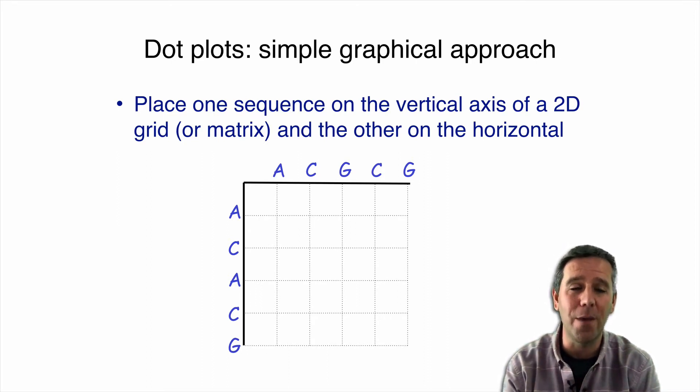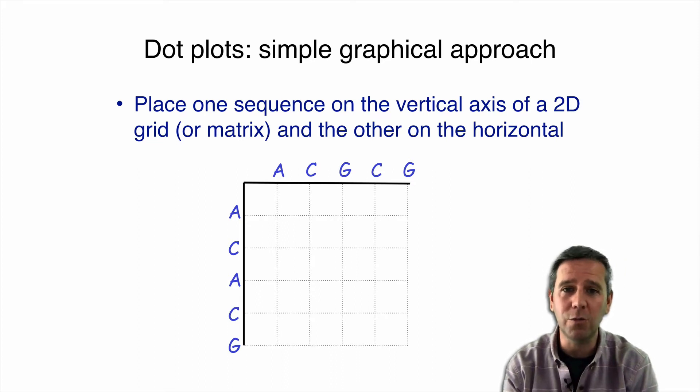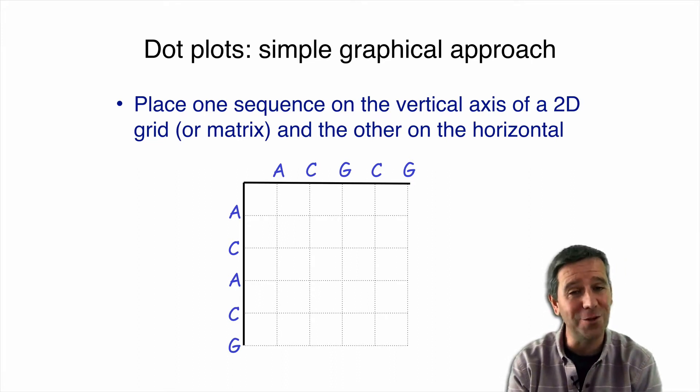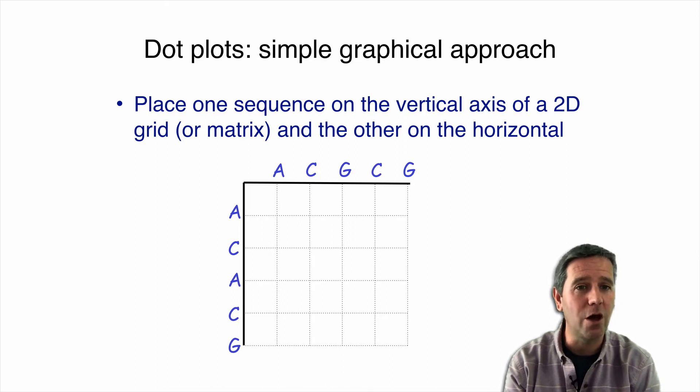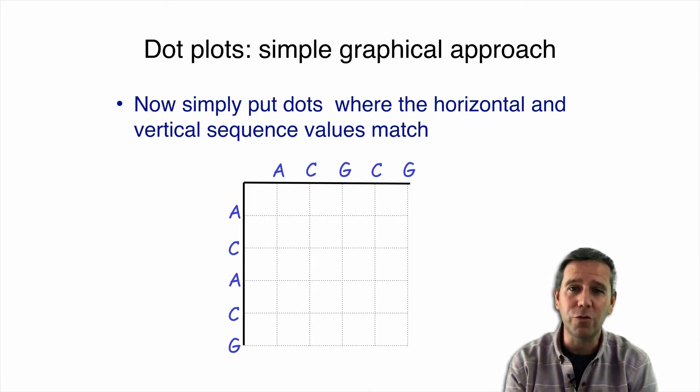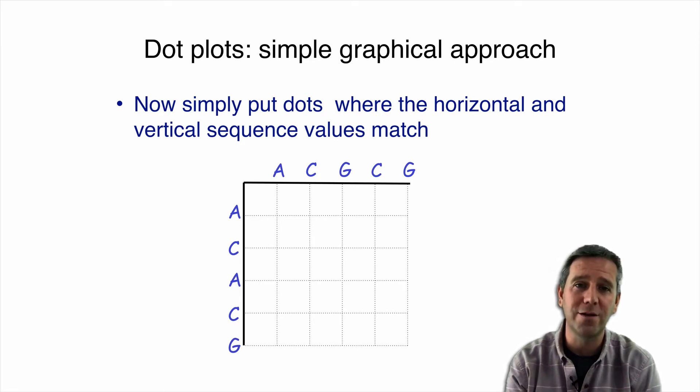That's the so-called dot plot method that places one sequence on the vertical axis of a little 2D grid like the one shown here. Some people call this little grid an alignment matrix, but it's just a table. The other sequence is on the horizontal side. And then what we do is we simply put dots where the horizontal and vertical sequence values match.